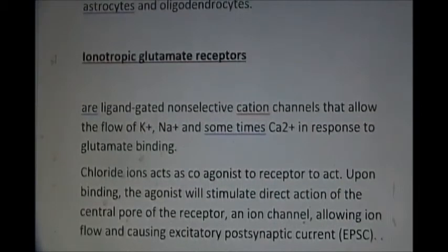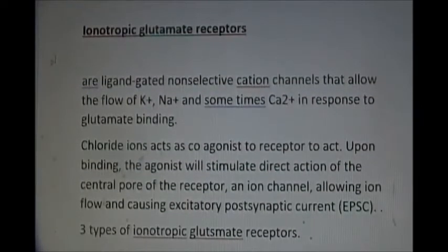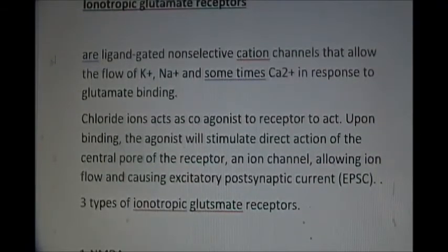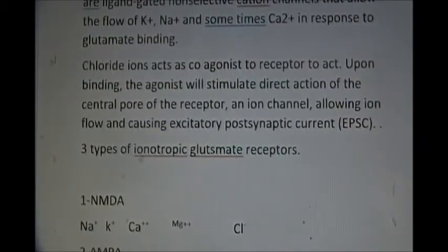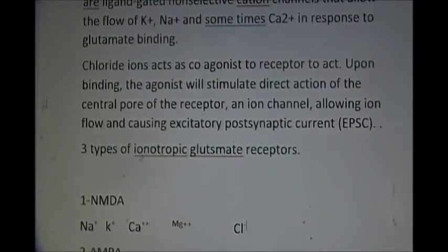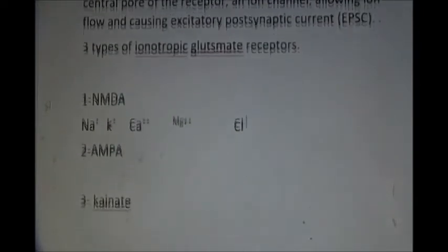There are two types of glutamate receptors: ionotropic and metabotropic. The ionotropic receptors are ligand-gated non-selective channels that allow the flow of different ions. The ionotropic receptors are of three types: number one, NMDA (N-methyl-D-aspartate); number two, AMPA (alpha-amino-3-hydroxy-5-methyl-4-isoxazolepropionic acid); and kainate.